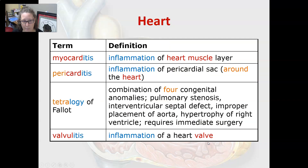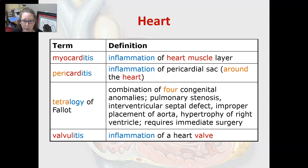Myocarditis is the inflammation of the heart muscle layer. Pericarditis is the inflammation of the pericardial sac, which is the sac around the heart. The tetralogy of Fallot is a combination of four congenital abnormalities.